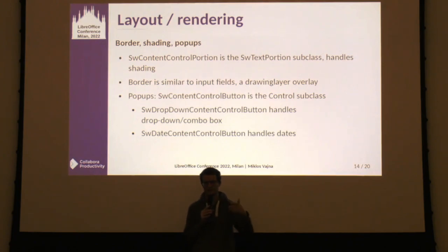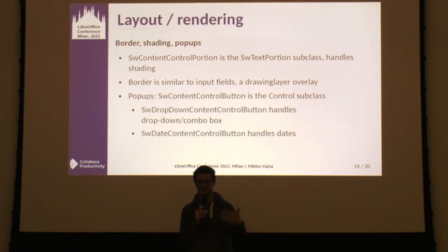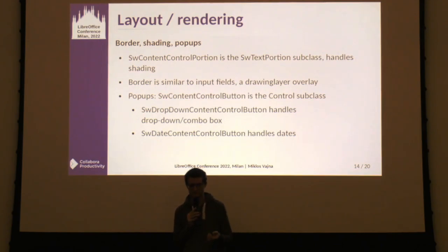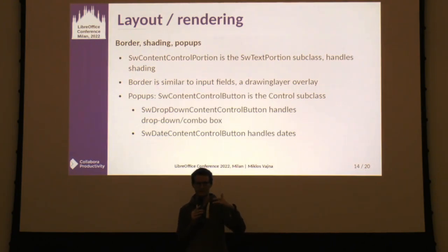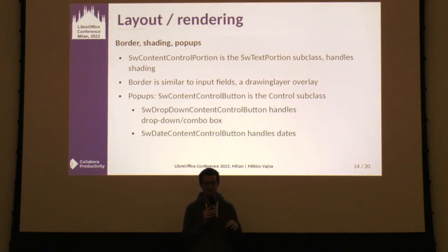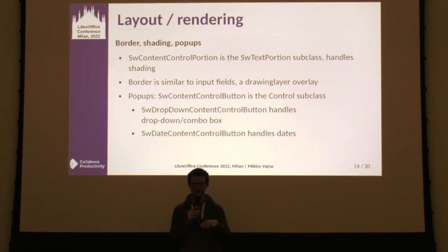For layout, it always works by creating layout portions, and now there is a content control portion similar to the normal text portion — that's how the layout knows how to do the shading and border around the content control. The border is quite similar to input fields, using an SDR overlay similar to selections on text ranges. For the popups, there is a control subclass similar to the page-break editing widget that knows how to travel with the document when you scroll. There are two of these: one for drop-downs and combo boxes, and one for the date picker.